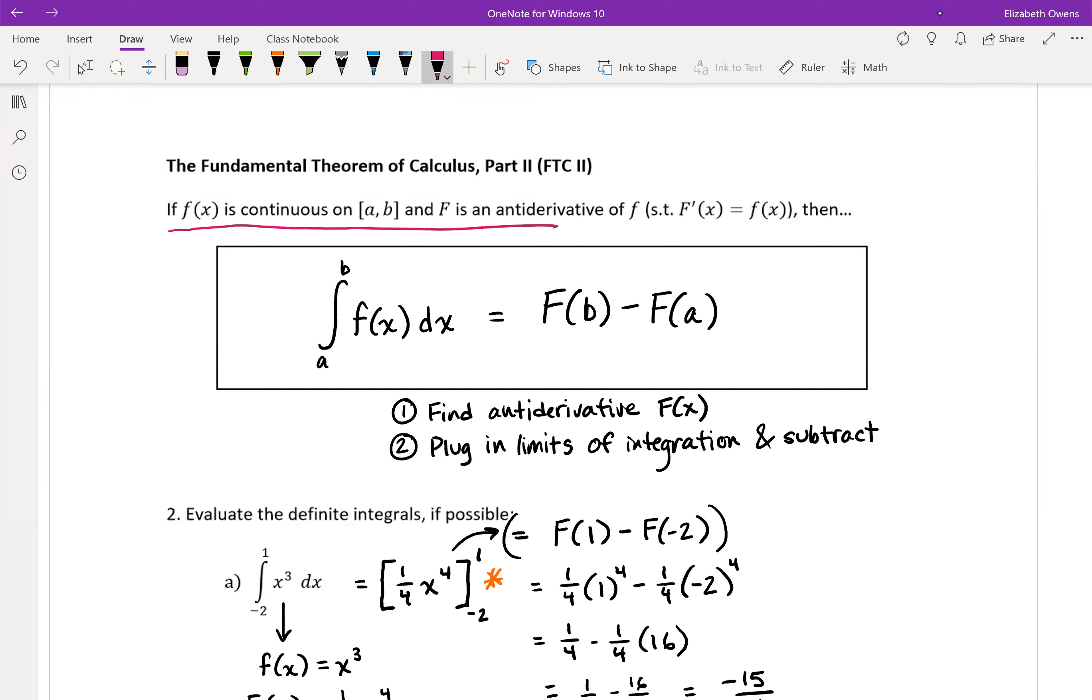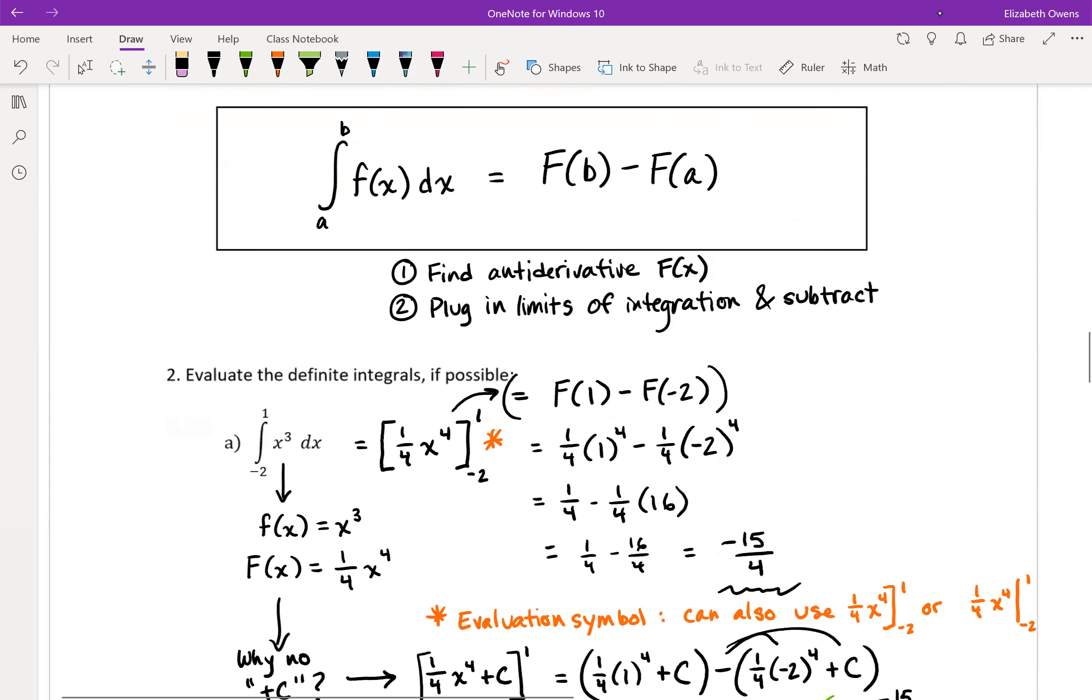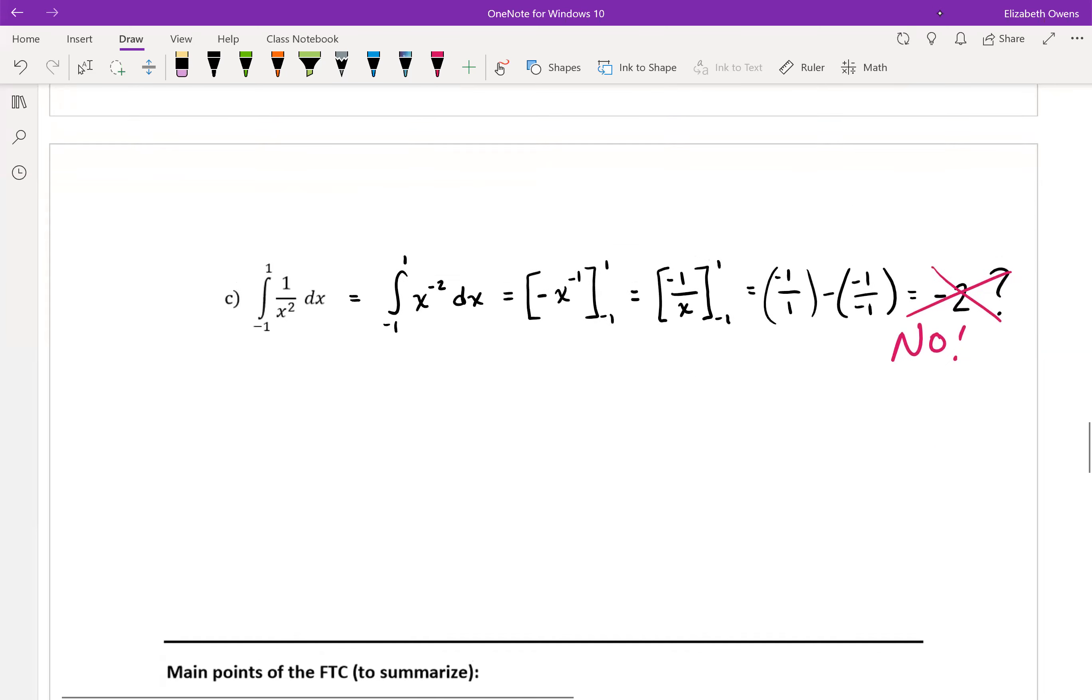If f of x is continuous on the interval from a to b, and big F is an antiderivative, but this is the part that's messing us up on this example here. So f of x, our integrand needs to be a continuous function on the interval that's given by our limits of integration.